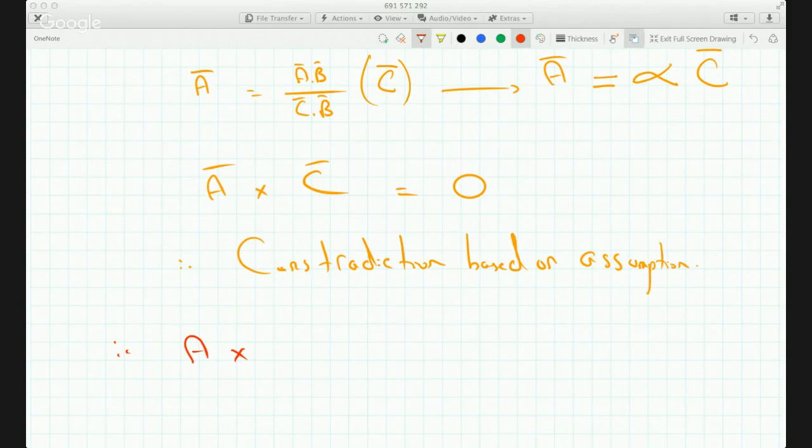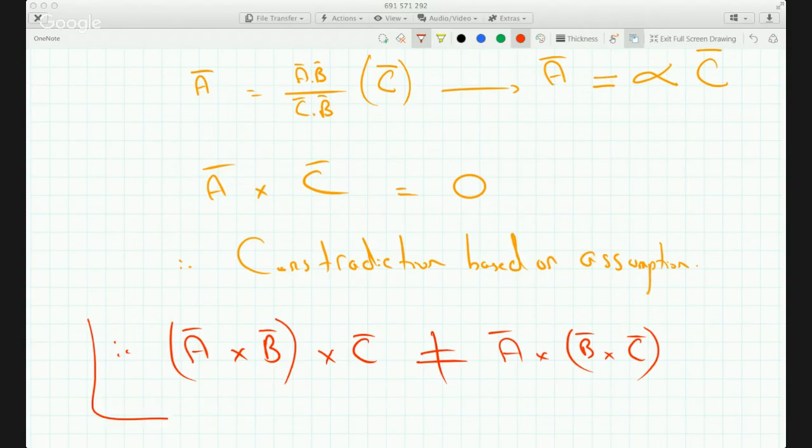Therefore the initial premise is incorrect, which means the cross product is not associative, so A cross B cross C does not equal A cross B cross C. You get it?